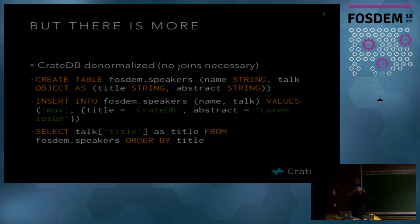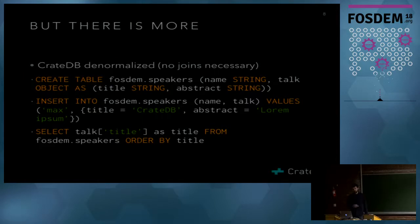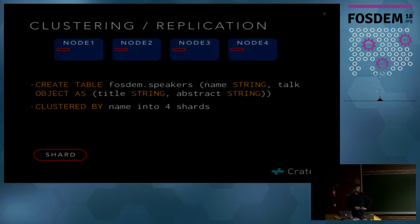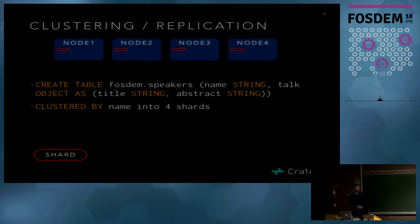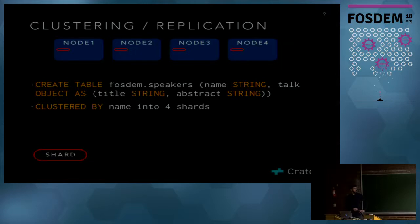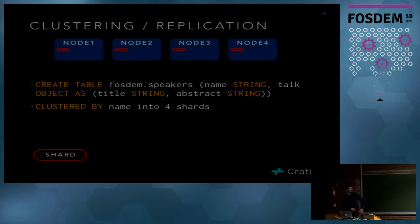CrateDB is great for unstructured data because you can ingest it very flexibly. When you create a table, because we're a distributed database, you can specify a clustering scheme. With a four-node cluster you can cluster by four shards — meaning the table is split into four parts called shards. Data with the same name will be on the same node, with hashing involved so data is evenly partitioned among nodes.